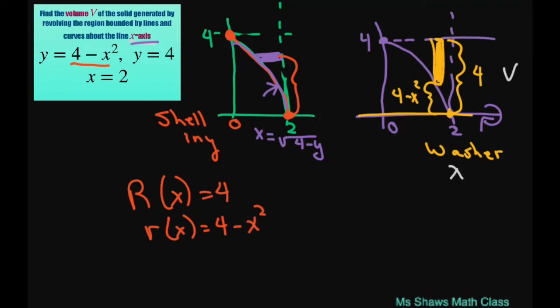And basically, you can look at it like you do with area. This is your upper bound, y equals 4, and this is your lower bound.